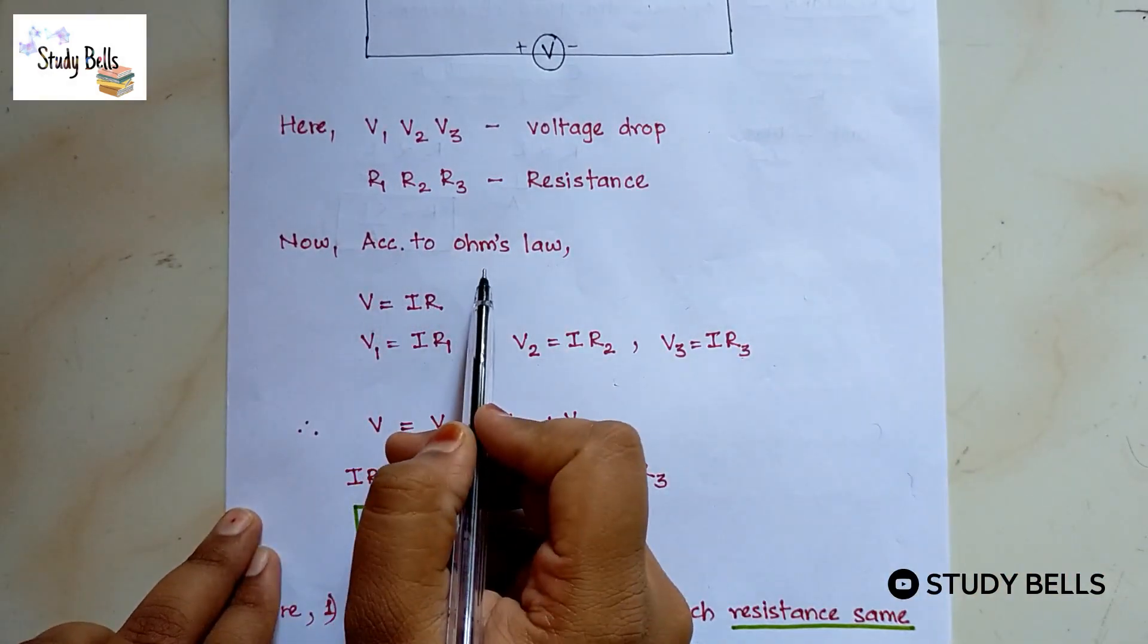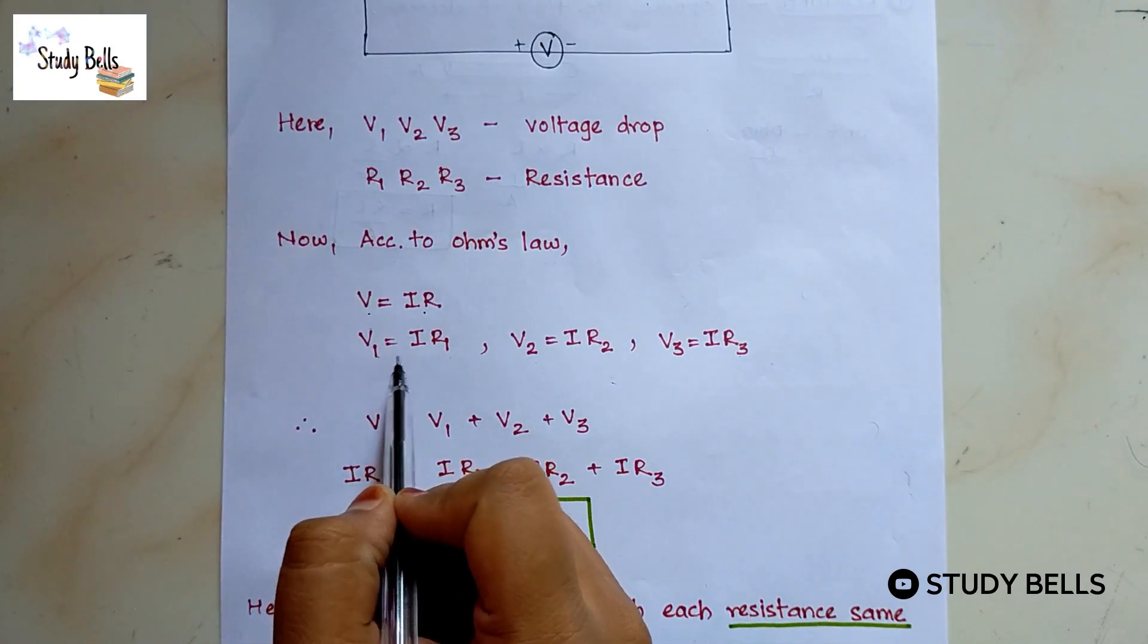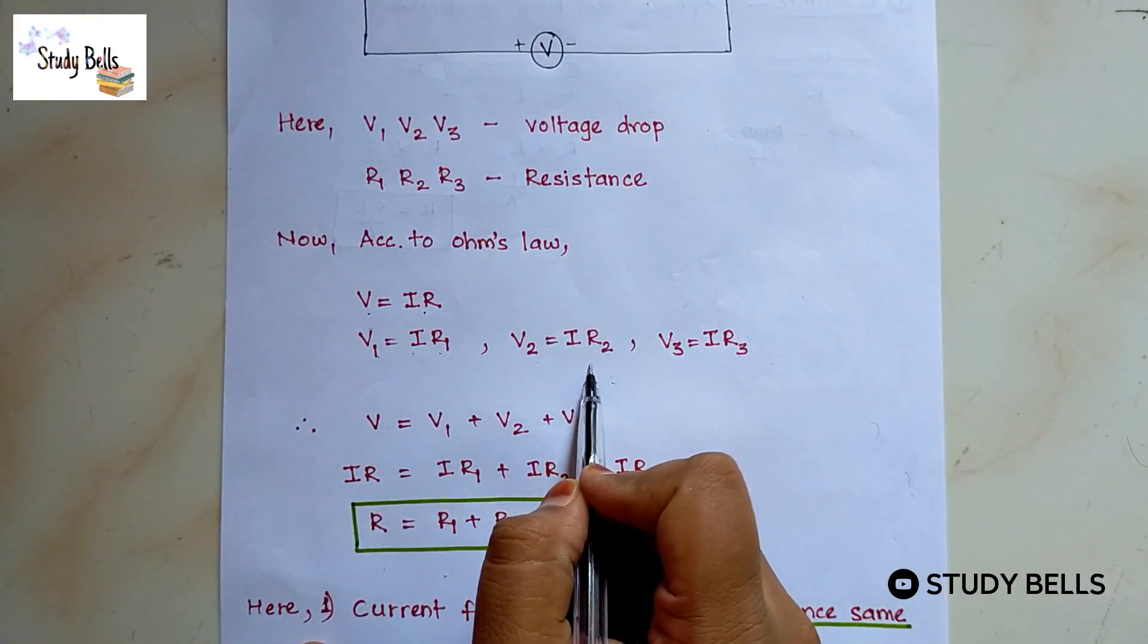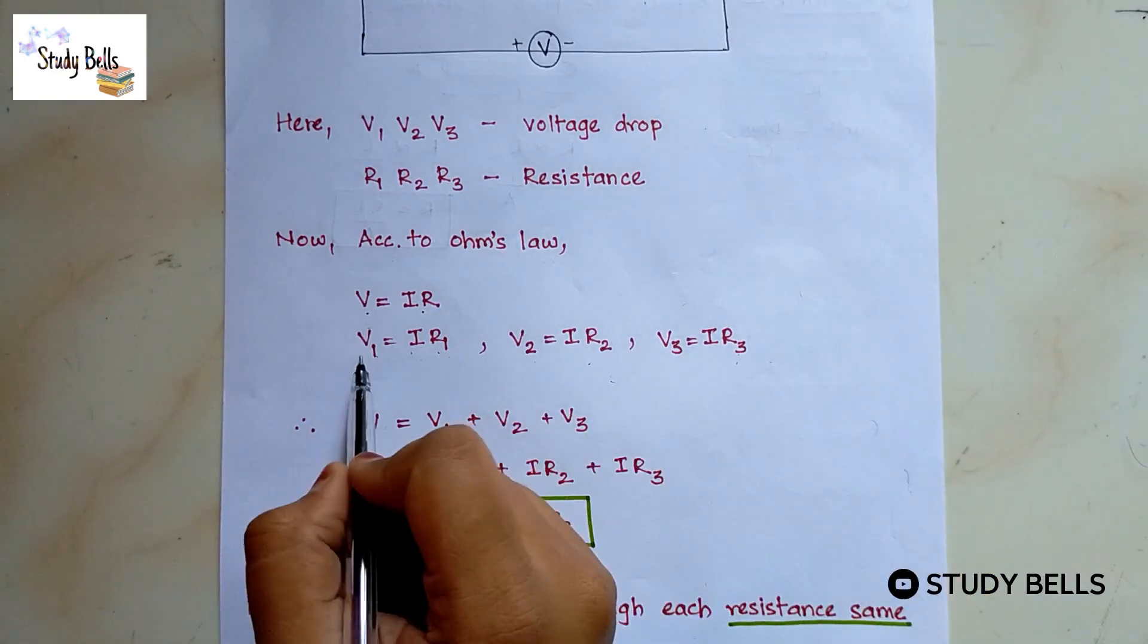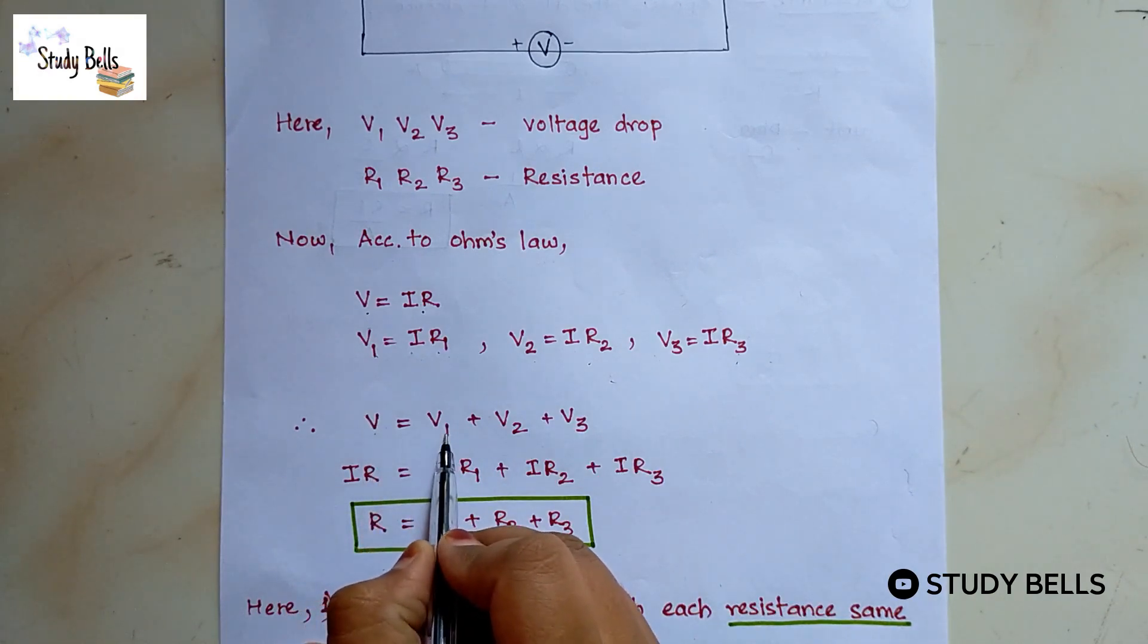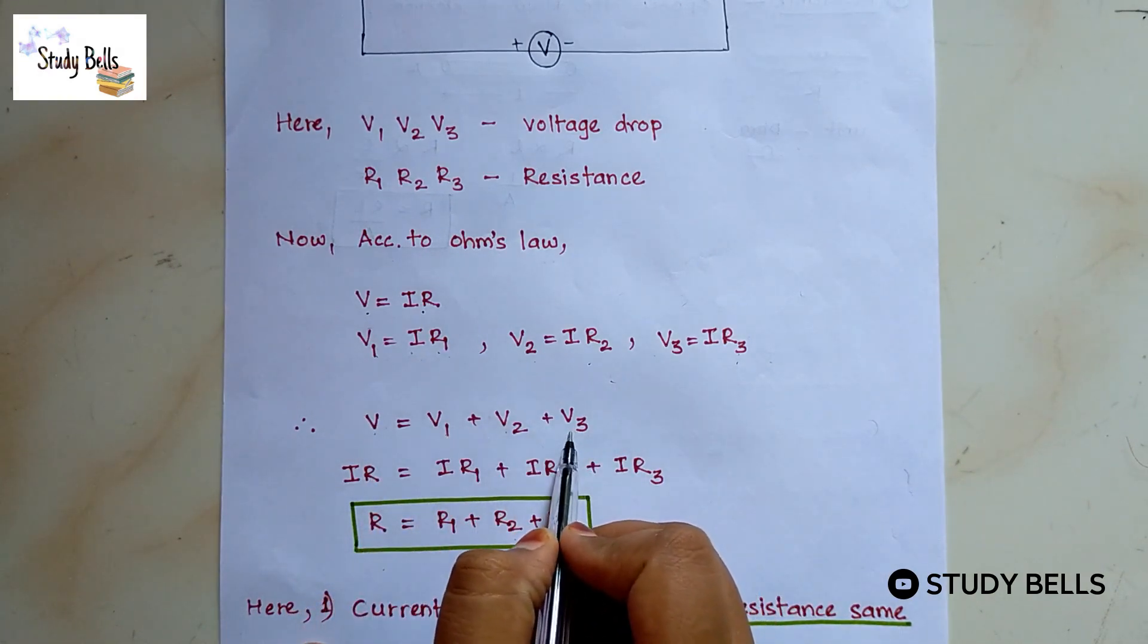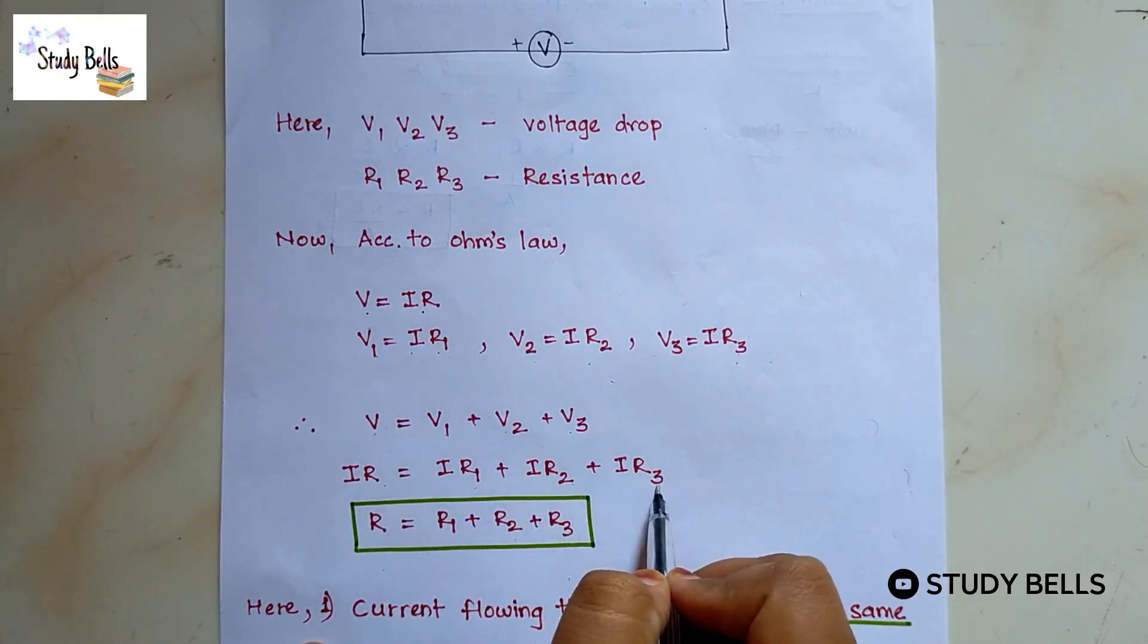According to Ohm's law V equals IR. So V1 equals IR1, V2 equals IR2, V3 equals IR3. When we add these three voltages we get V equals V1 plus V2 plus V3. IR equals IR1 plus IR2 plus IR3.